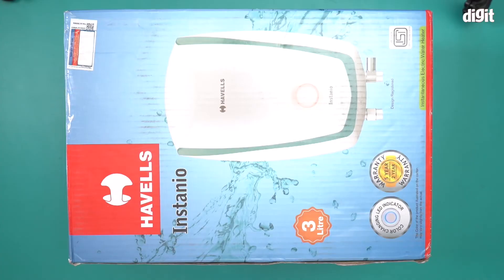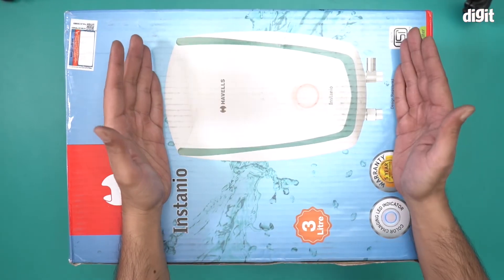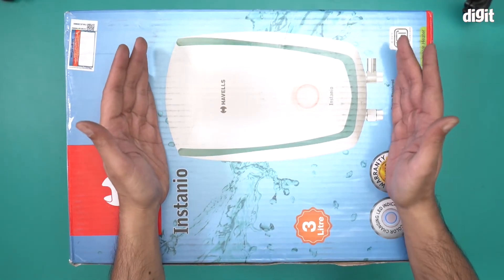Hello and welcome to the unboxing of the Havells Instanio 3-liter electric water heater. There's an image of the water heater right on top. This is a 3-liter geyser.